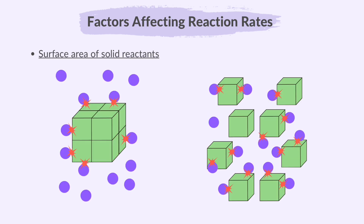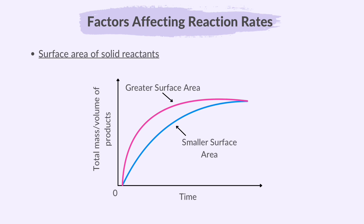Reducing the size of the solid reactant into smaller particles or using powdered forms increases the surface area and speeds up the reaction. If you look at the graph line for the reaction with a powdered reactant, it has a steeper gradient at the start and becomes horizontal sooner, meaning it has a higher rate of reaction and the reaction finishes sooner compared to the same reaction but with bigger pieces of the reactant.